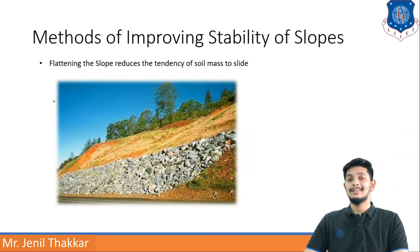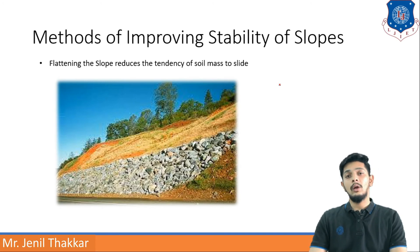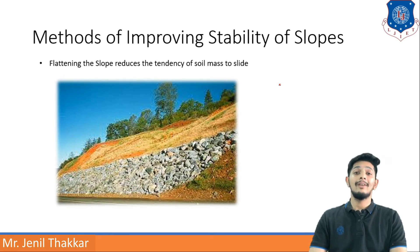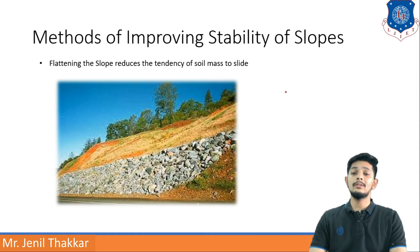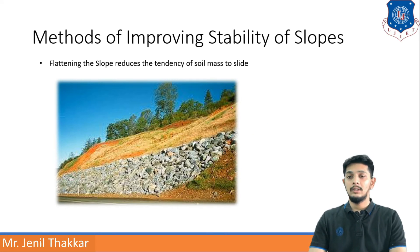Now let us discuss methods of improving stability of slopes. If stability is not maintained in slopes it can be harmful and cause loss of lives. The first method is flattening the slope, which reduces the tendency of soil mass to slide. As seen in hilly regions, when the slope is flattened there are fewer chances of soil or slope sliding.